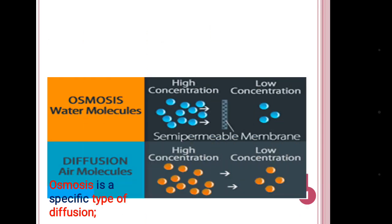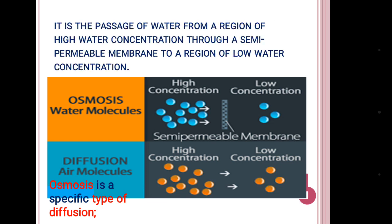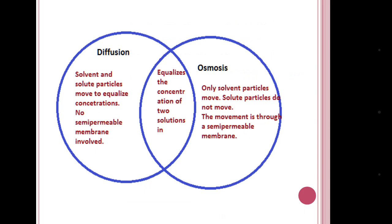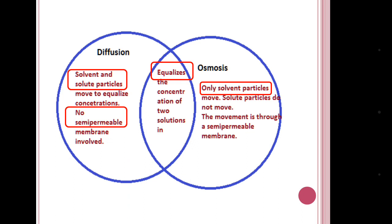We can say that osmosis is a specific type of diffusion because here the passage of water from a region of high concentration occurs through a semi-permeable membrane to a region of low water concentration. If we compare diffusion and osmosis: both aim to equalize the concentration of two solutions, but diffusion allows both solvent and solute particles to pass, while osmosis allows only solvent particles. Diffusion involves no semi-permeable membrane, whereas osmosis involves movement through a semi-permeable membrane.